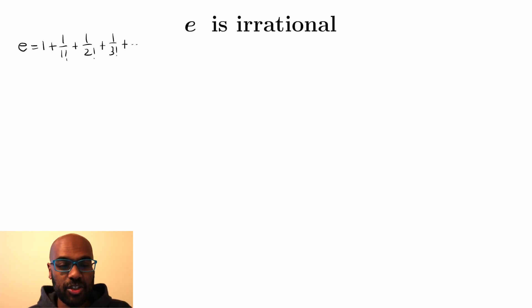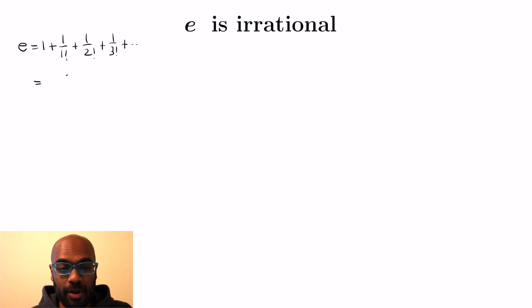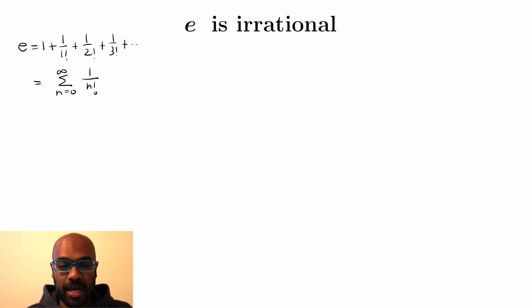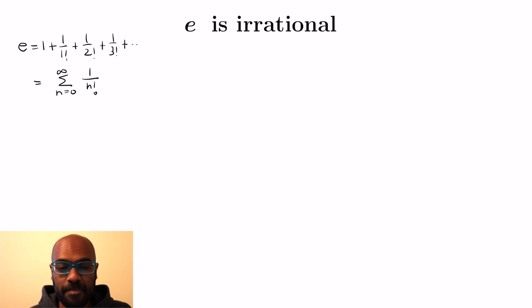That expansion is 1 plus 1 over 1 factorial plus 1 over 2 factorial plus 1 over 3 factorial, and so on. Which you can write in compact form as the sum from n equals 0 to infinity of 1 over n factorial.